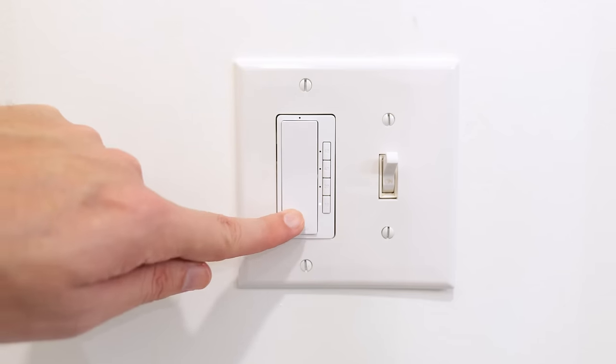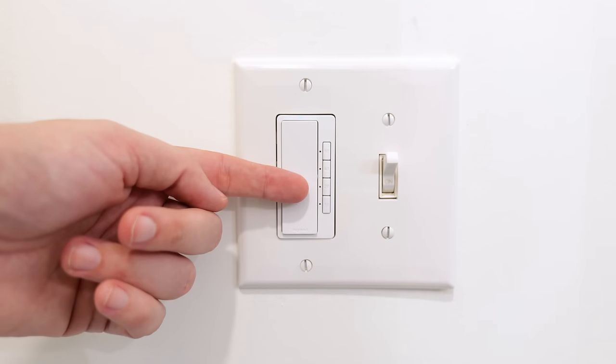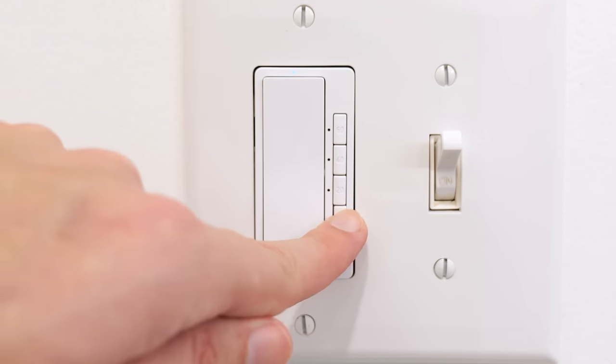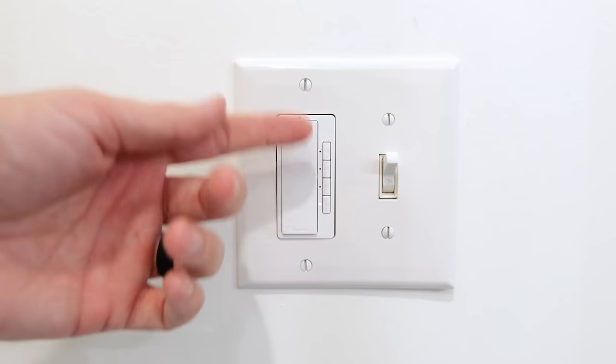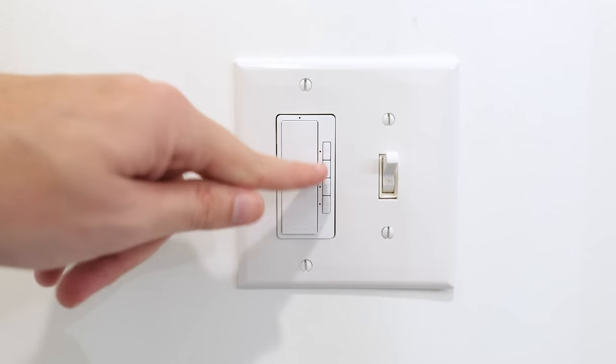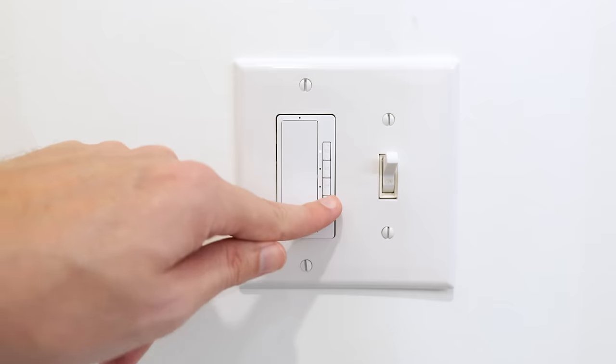Likewise, we can also push the bottom here and it will turn the exhaust fan off. If we want to pick a different duration or just pick one specifically, all we have to do is push one of those buttons. It illuminates that time. So now it's going to go for 10 minutes, or of course I could do 20, 40, 60, and each time the light is going to let you know which setting it's on.